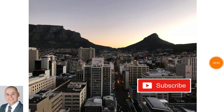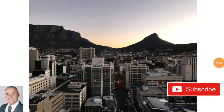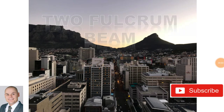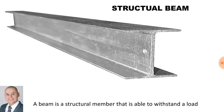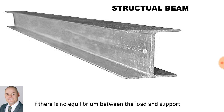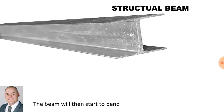Welcome to N1 Engineering Science, and in this video we'll be taking a look at a two-fulcrum beam. A beam is a structural member that is able to withstand a load. If there is no equilibrium between the load and support, the beam will start to bend.